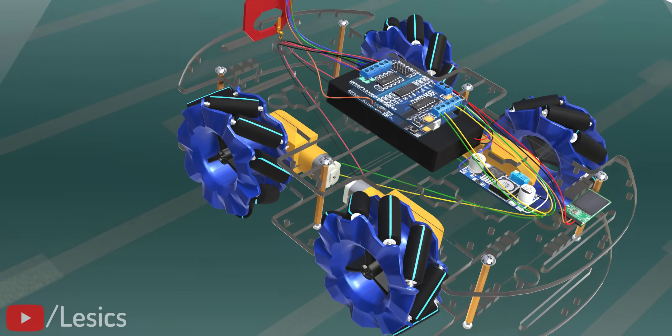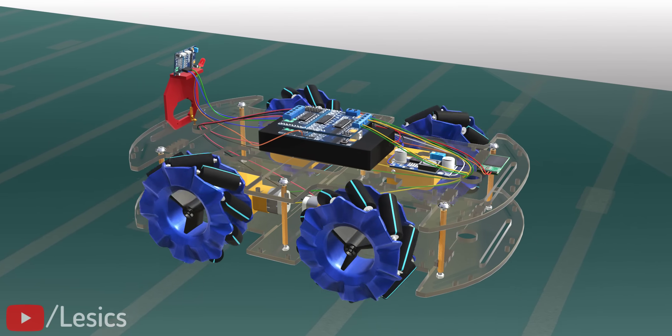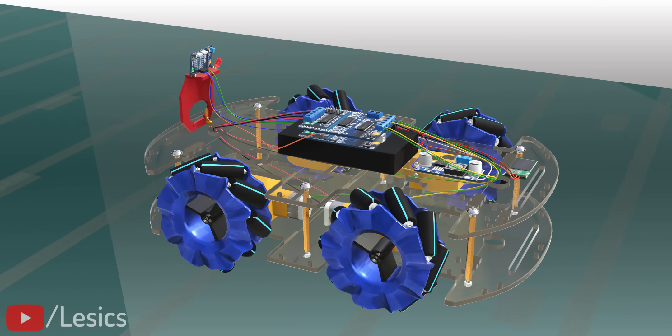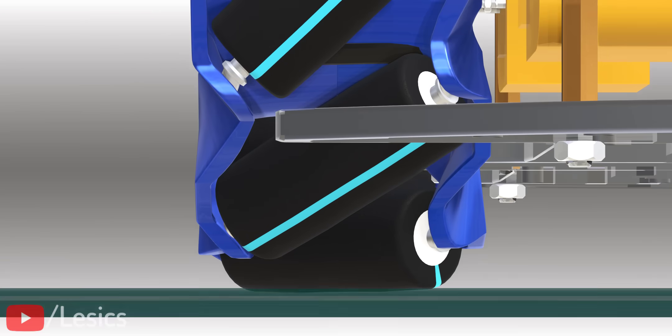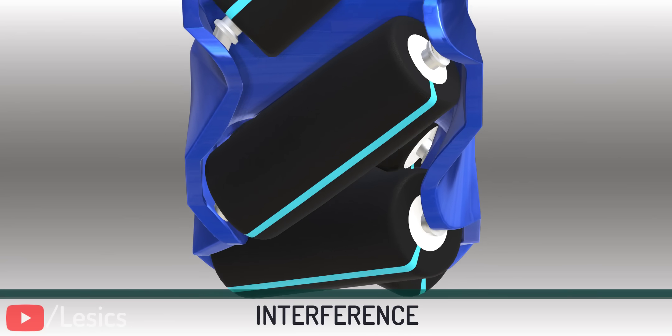This car will move forward, but its movement will be jerky rather than fluid. The issue is with the rollers, as you can clearly see in these animations. These roller-road interferences will cause jerky movement.